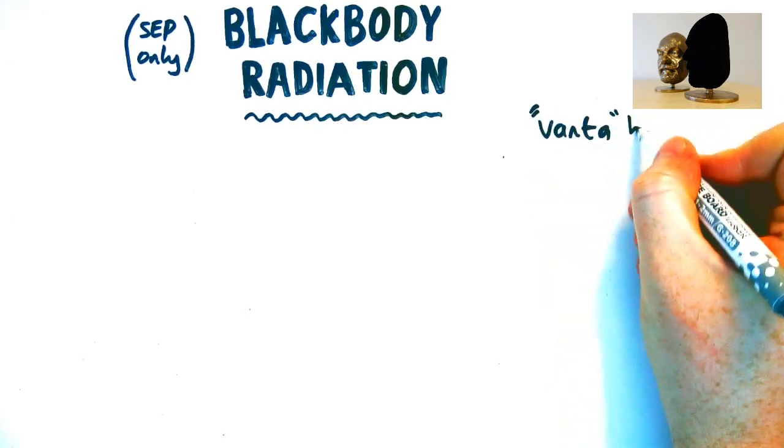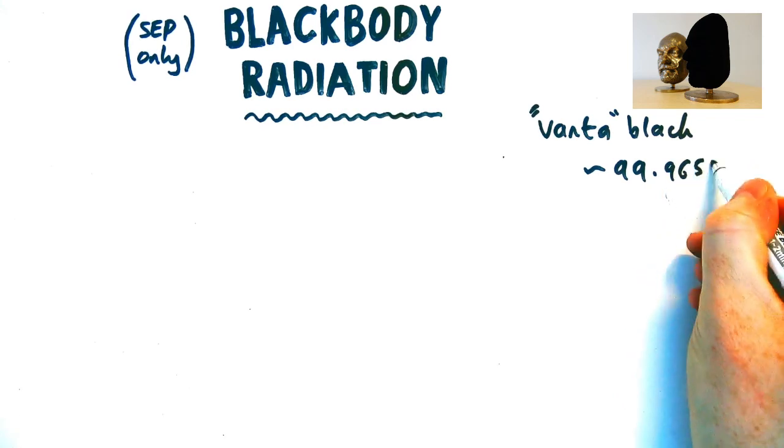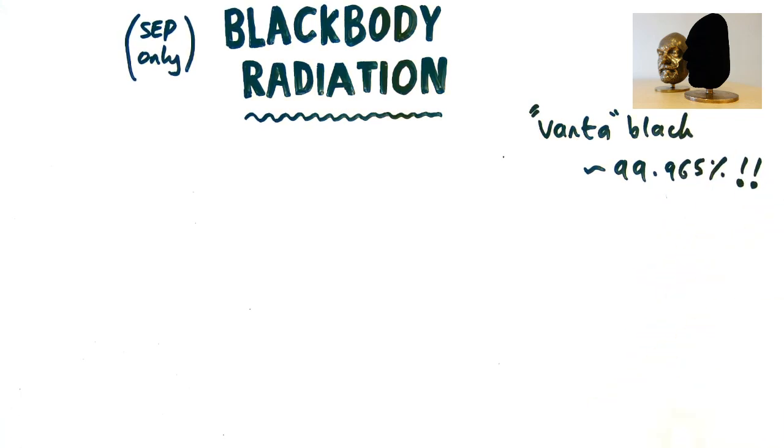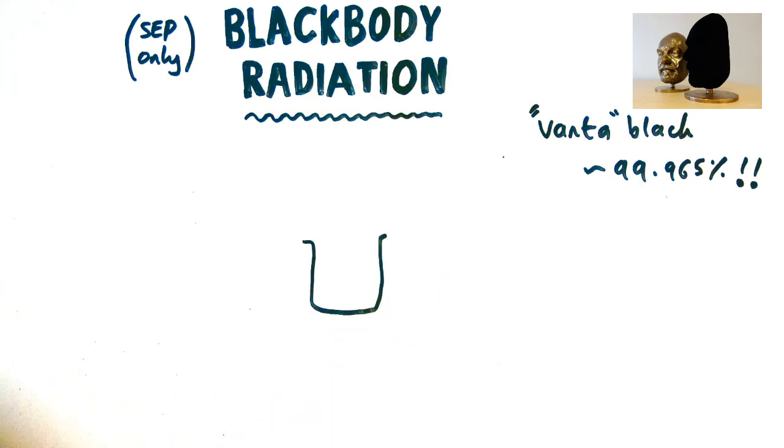Scientists have developed a color called Vantablack which absorbs 99.965% of all radiation on it and it looks a bit like this, hardly any reflection at all you can see.